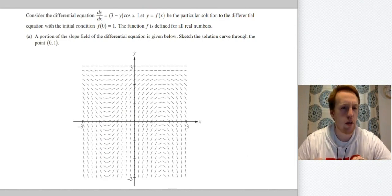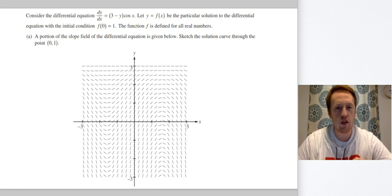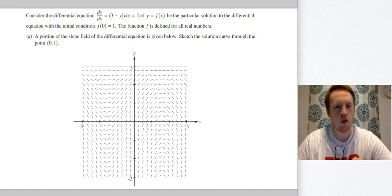Consider the differential equation dy/dx = (3 - y)cos(x). Let y = f(x) be the particular solution with the initial condition f(0) = 1. The function f is defined for all real numbers. Part a, a portion of the slope field of the differential equation is given below. Sketch the solution curve through the point (0, 1).